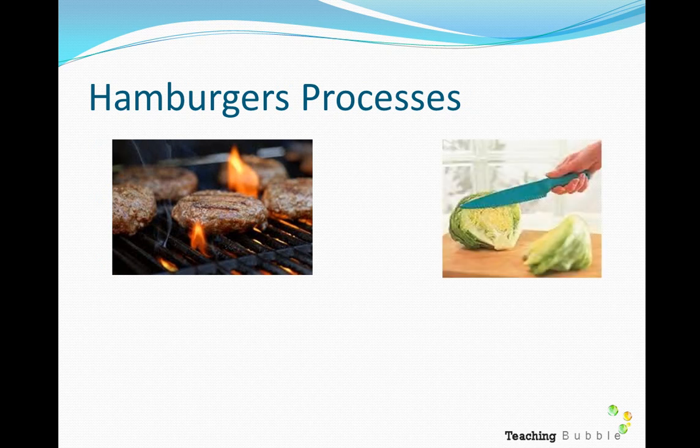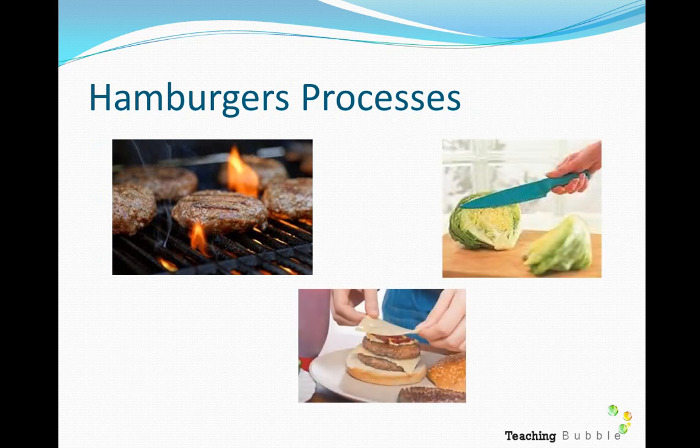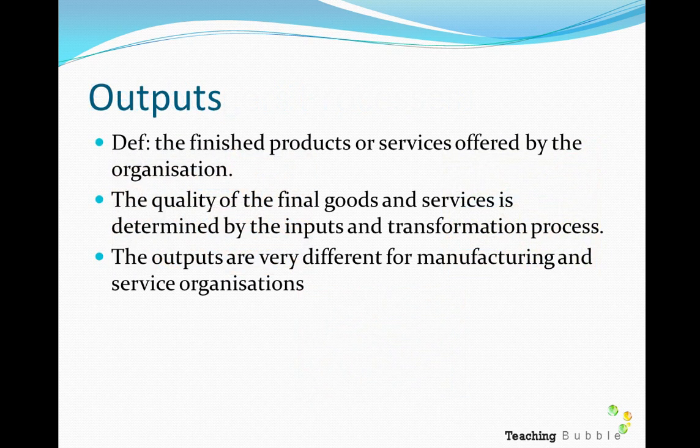For the hamburger, the transformation processes would include cooking the hamburgers, cutting the lettuce and tomatoes, assembling the burger, and then serving the food — and probably many other things in between. Once those inputs have been transformed, the result is the final product, which we call the output — the finished product, whether that be a service or, in our example, a tangible good like a hamburger.